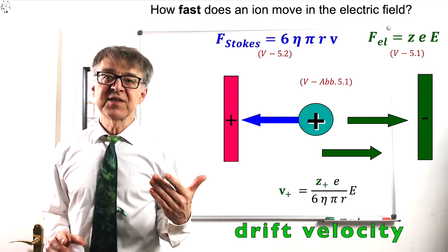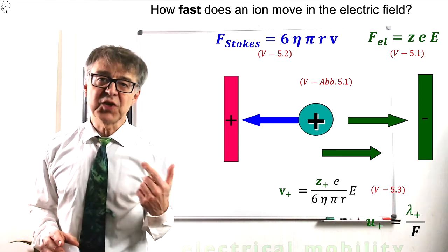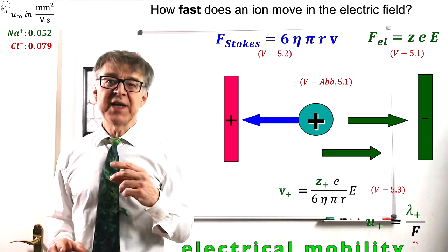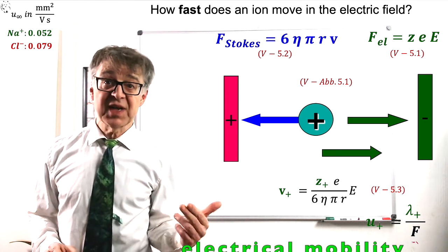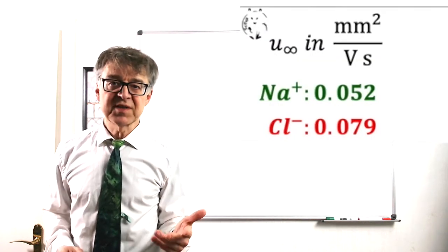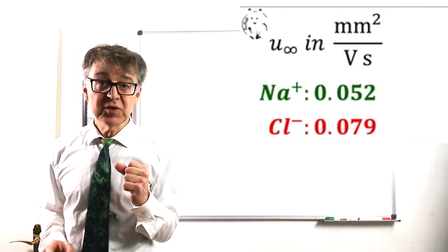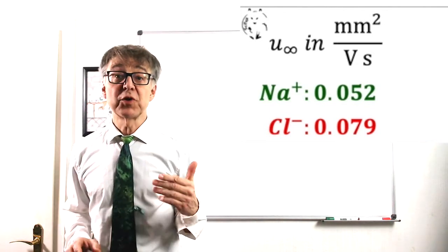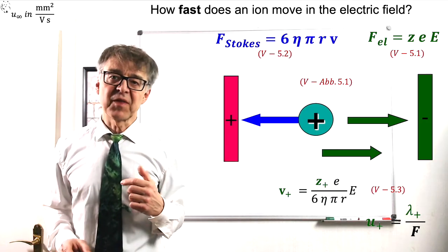The drift velocity depends on the electric field strength E and the ion mobility U. The ion mobility U can easily be obtained by dividing the ion conductivity lambda by Faraday's constant. With chloride possessing a larger conductivity than the cation in saline solution, chloride also shows a higher mobility and a higher drift velocity compared with the sodium ion.